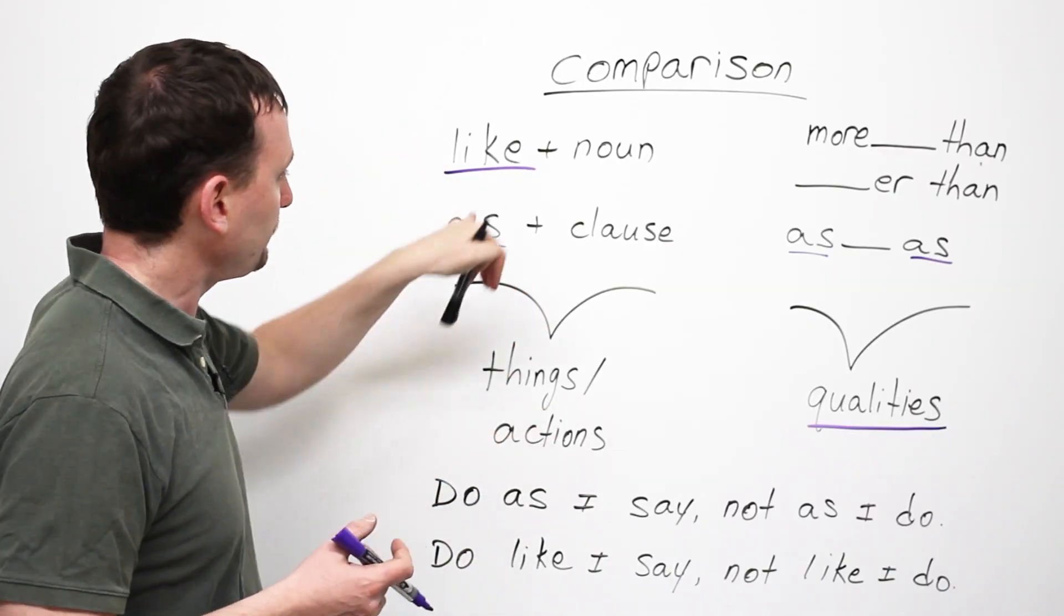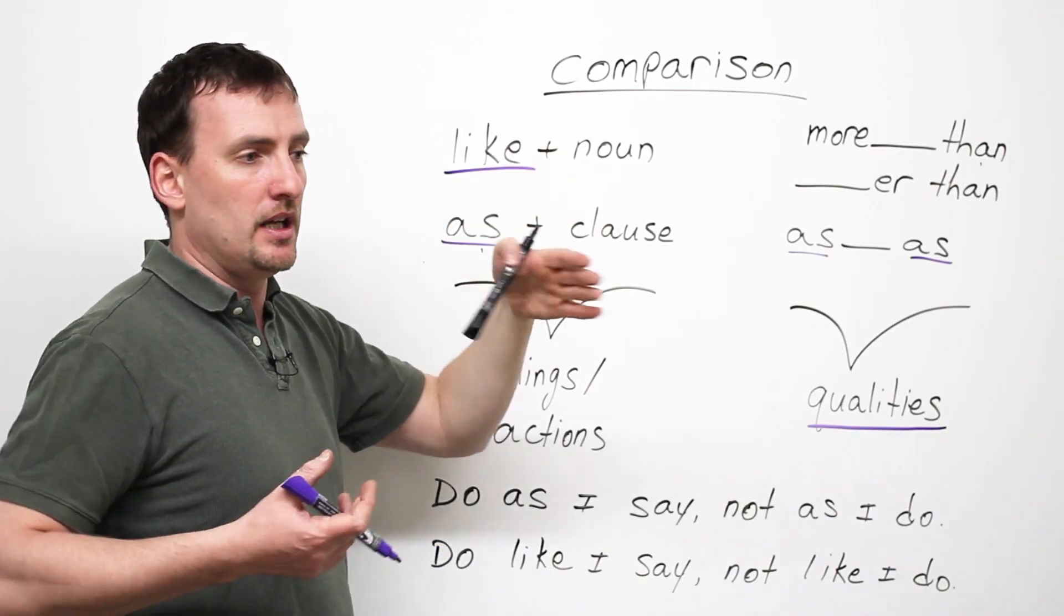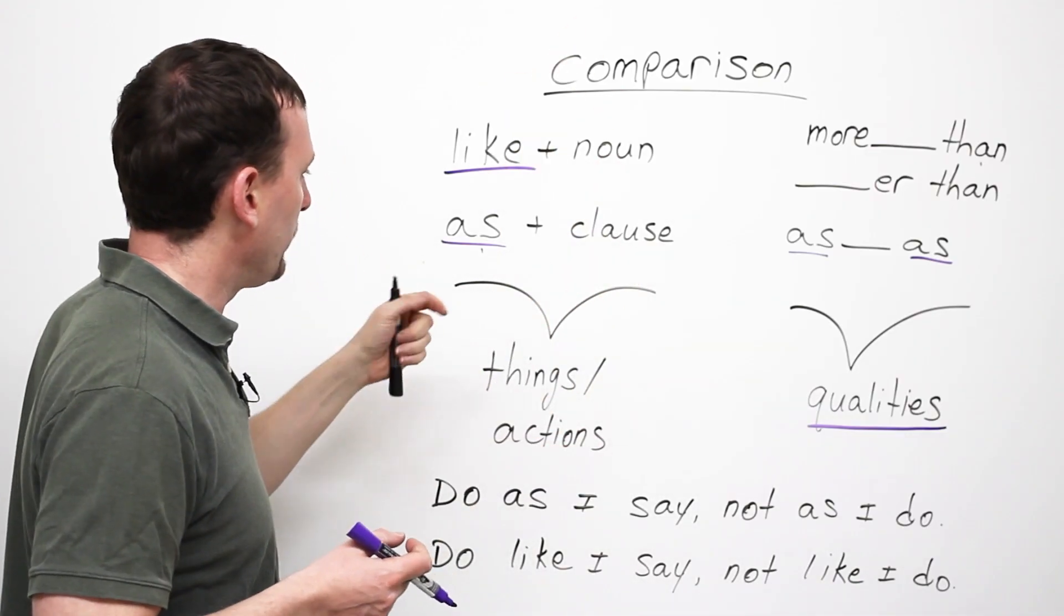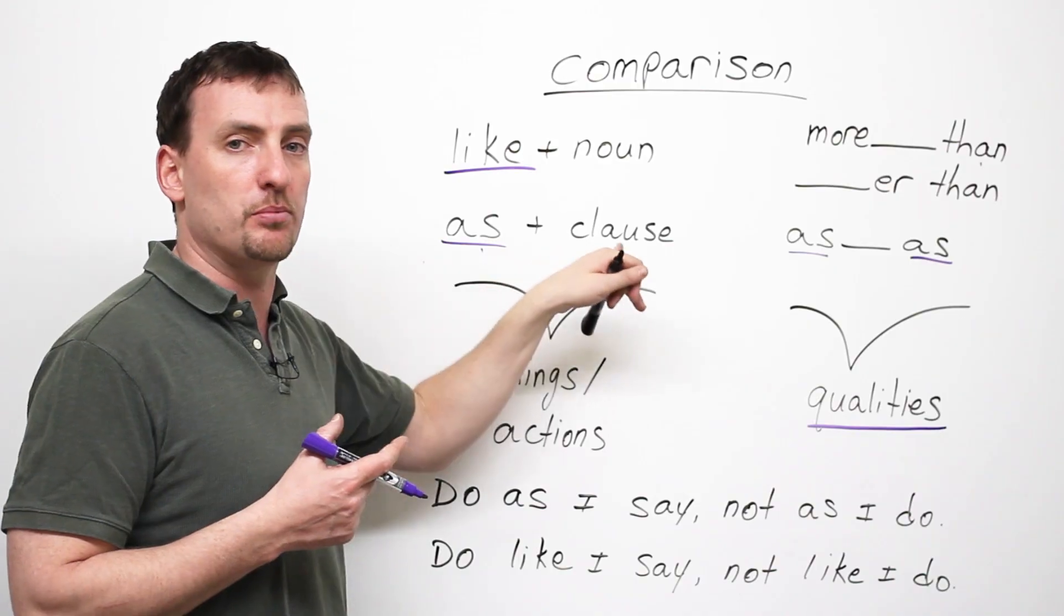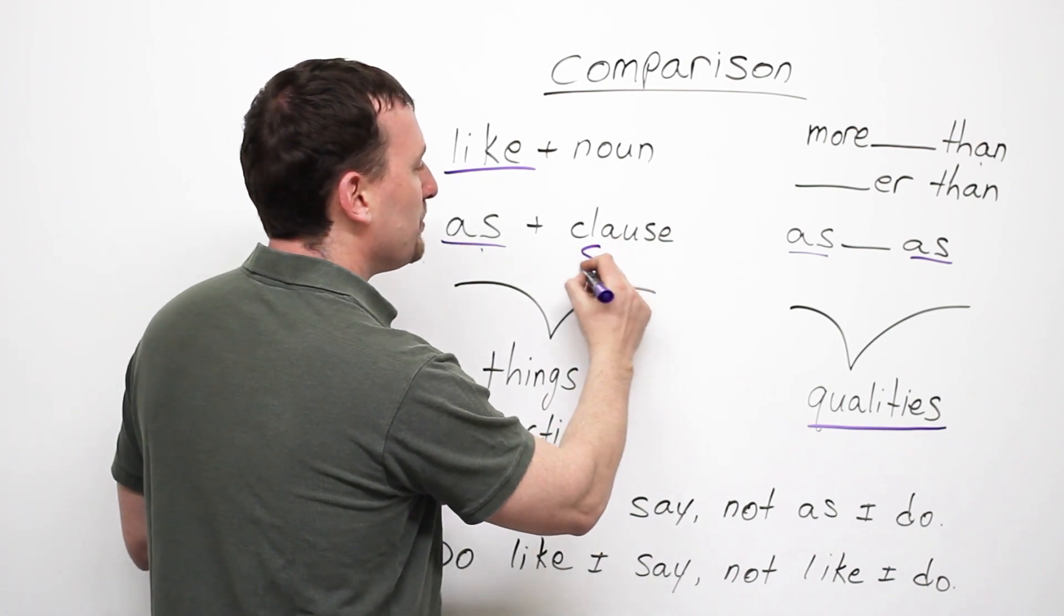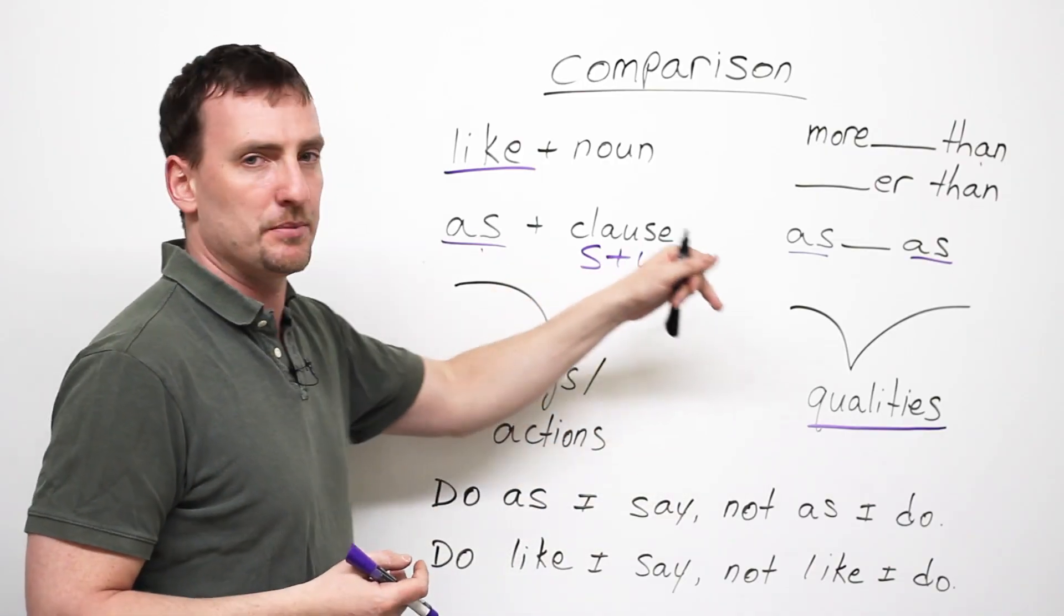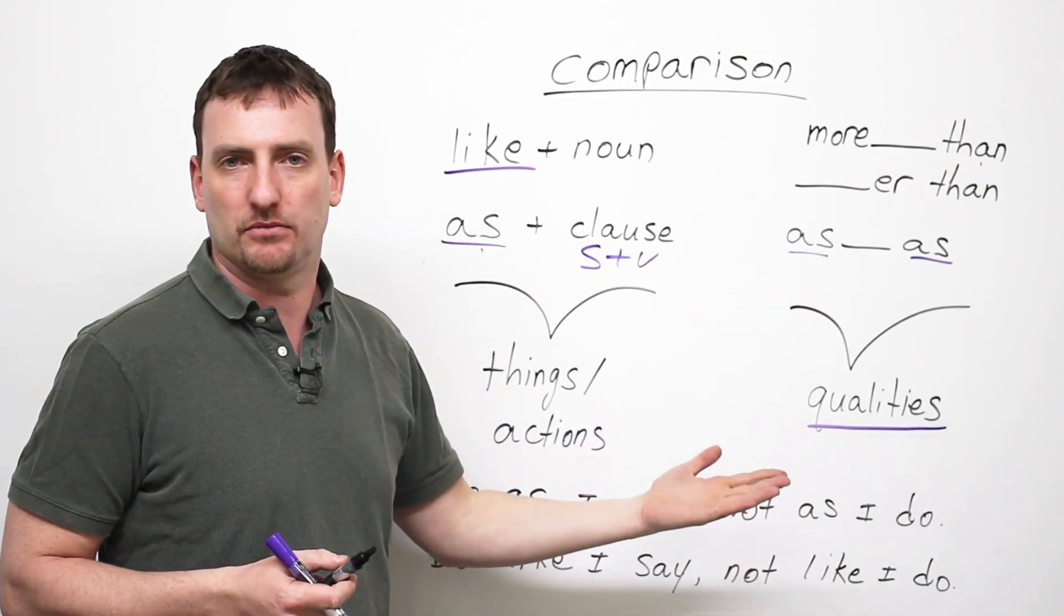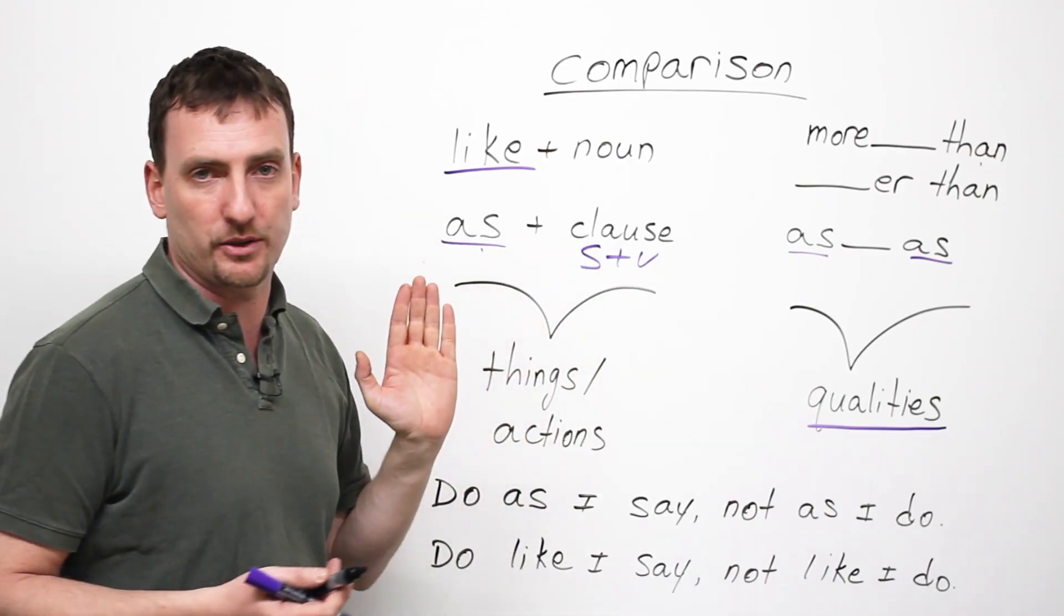Like is a preposition. It is always followed by a noun. The flower is blue like the sky. We're talking about comparing the two things. As is always followed by a clause. As is a conjunction, followed by a clause. If you remember, what is a clause? Yes, it is a group of words that must include a subject and a verb. So, as, subject and verb. She treats me as I would like to be treated. We're talking about the treatment. How she treats me, how I want to be treated. Those are the two things we're comparing.